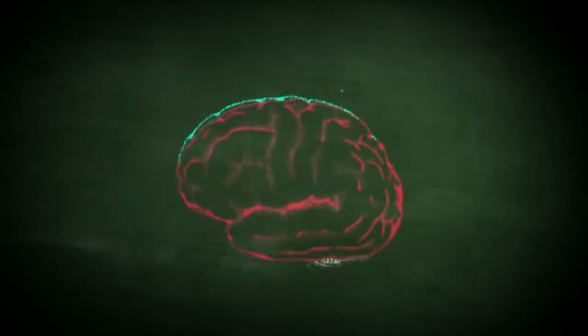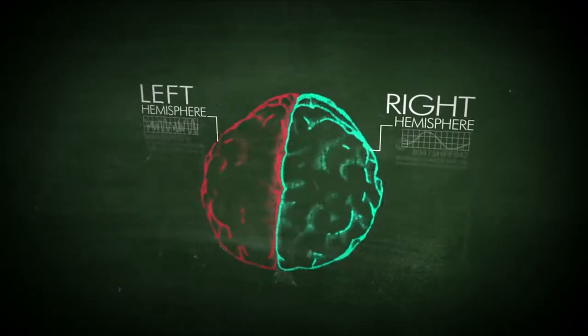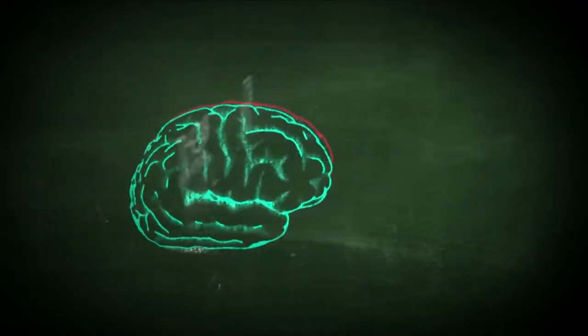divided into two hemispheres, the left and the right. Each side processes reality in a different way. The left side thinks in words and the right hemisphere thinks in images.